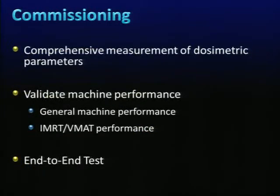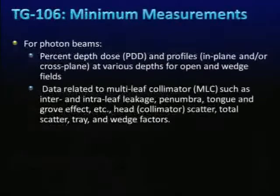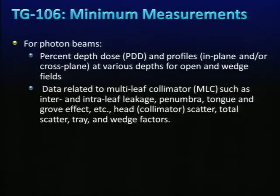Commissioning has three major parts: first, comprehensive measurement of dosimetric parameters; second, validating machine performance including general, VMAT, and RapidArc performance; and third, end-to-end testing. A good guideline is AAPM TG-106, which specifies minimum requirements for PDD and profiles at various depths and field sizes, MLC-related data such as inter- and intra-leaf leakage, penumbra, tongue-and-groove effects, head scatter, total scatter, tray, and wedge factors.